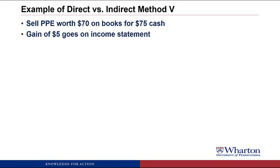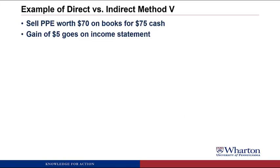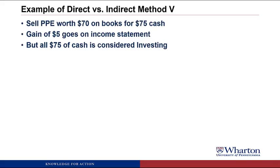That's going to result in a gain of $5, which will go on the income statement. Does this $5 gain count as revenue? Although this gain will go on the income statement and increase net income just like revenue would, we're not going to consider it top-line revenue because it's not part of our core business activities — we're not in the business of buying and selling buildings. Because it's not a core business activity, it's going to be an investing activity. And because it's an investing activity, we need to remove that gain out of the operating section and place it into the investing section. We consider all $75 of cash received as an investing activity.